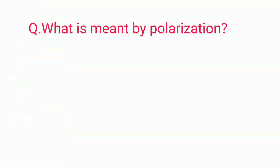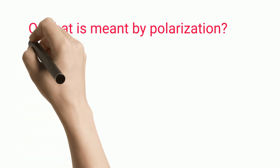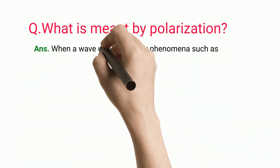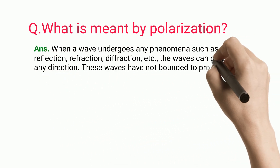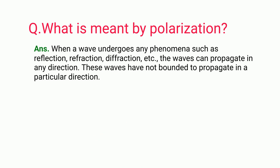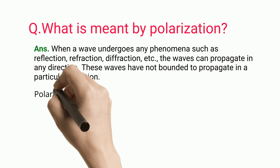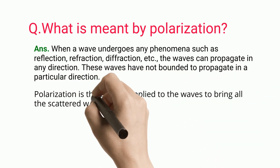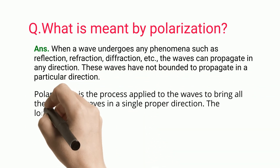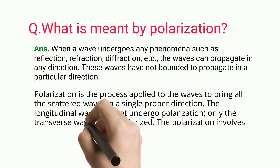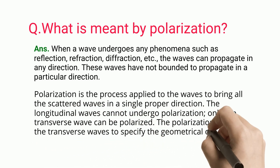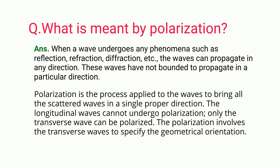What is meant by polarization? When a wave undergoes any phenomena such as reflection, refraction, diffraction, etc., the waves can propagate in any direction; these waves are not bounded to propagate in a particular direction. Polarization is the process applied to waves to bring all the scattered waves into a single proper direction. Longitudinal waves cannot undergo polarization — only transverse waves can be polarized. Polarization involves transverse waves to specify their geometrical orientation.